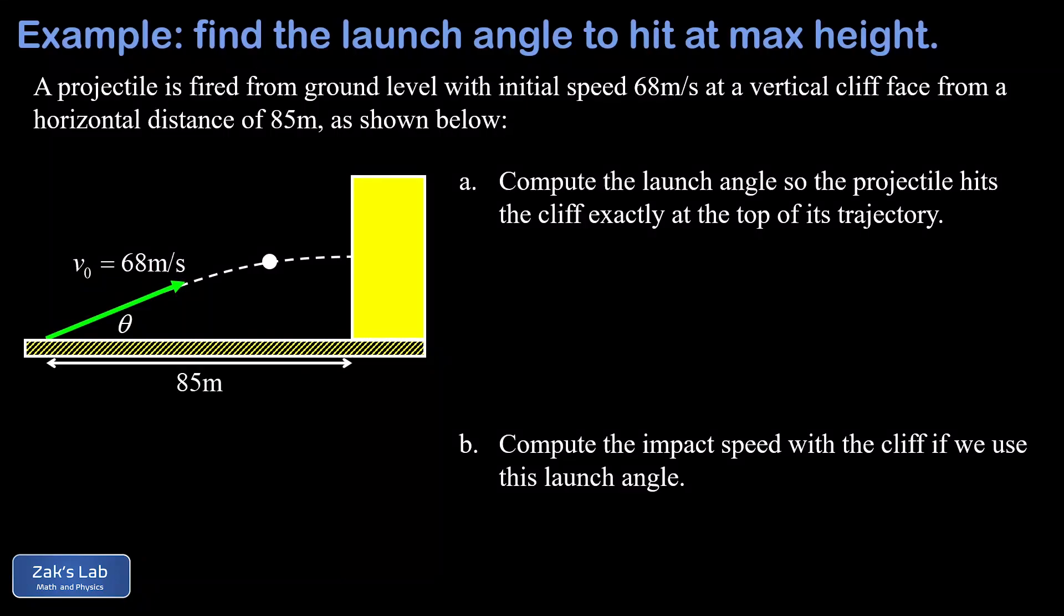In this video we're looking at a projectile motion problem where the main goal is to find the launch angle. What we know about the impact is unusual - we're told that it runs into this vertical cliff face exactly at the top of its trajectory. At the top of the trajectory we see this horizontal final velocity because we're at the transition between the projectile moving up and moving down, and that means the y velocity is zero.